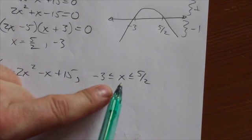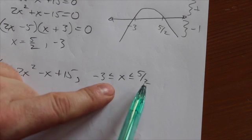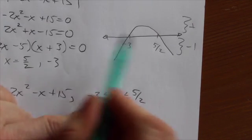And that occurs between negative 3 and 5 halves. So x is greater than or equal to negative 3, x is less than or equal to 5 halves. It's in between those two.